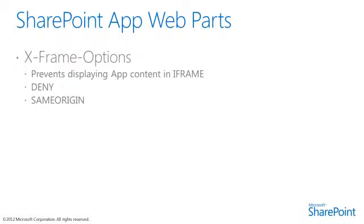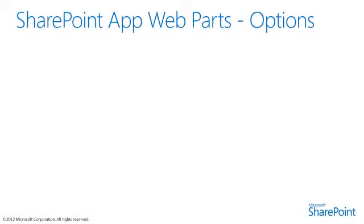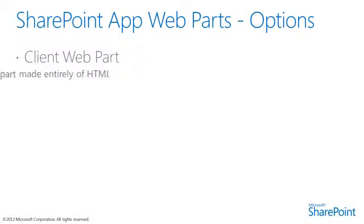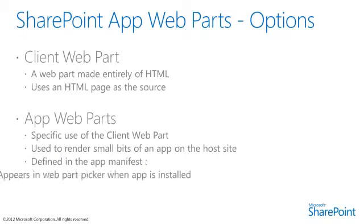To address X-Frame options in our app, we can use the AllowFraming control to enable the app to run inside a frame. This ensures we can show our app in an iframe in the host web. Apps can specify parts, static HTML, or a small page to surface in an iframe. This information populates a generic web part called the client web part, surfaced inside the host web as if it were a normal web part. Users can add and interact with app parts just as they would normal web parts.